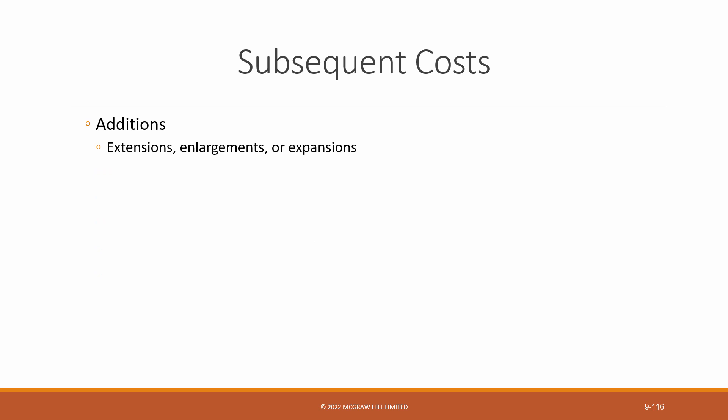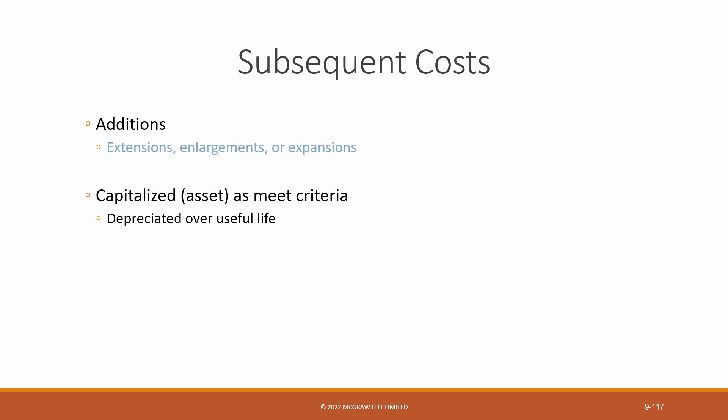Let's deal with each of these individually, starting with additions. These are extensions or enlargements, expansions of an already existing asset. Examples would be adding a wing to a hospital, building additional floors on an existing building, or adding an air conditioning system to an office building. Additions are capitalized, meaning they're recorded as an asset, because they meet the criteria. They provide future economic benefit and their cost is measurable. They are depreciated over the future periods that benefit from their use.